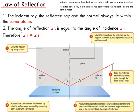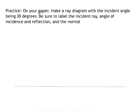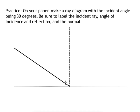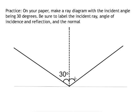Here's a quick example: on your paper, make a ray diagram with the incident angle being 30 degrees. Be sure to label the incident ray, angle of incidence and reflection, and the normal. So here I've got my incident ray. Next I'm going to draw a normal. If I use a protractor to measure my angle of incidence, that's 30 degrees. Using the law of reflection, I know that my reflected ray should reflect back at an angle of 30 degrees between the normal and my reflected ray.